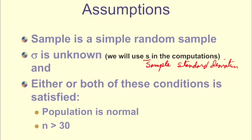So our population is normal, or our n is greater than 30. Our sample size is greater than 30. Remember, these are the conditions to use a t-test. That and our standard deviation is unknown.